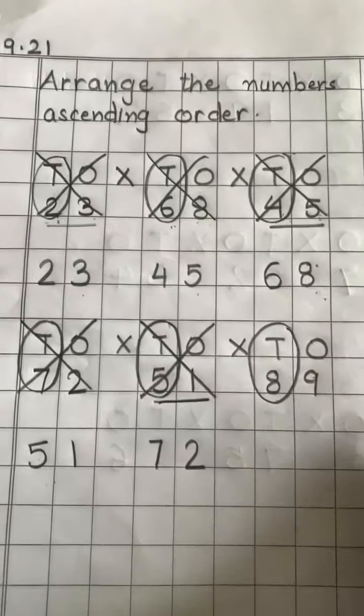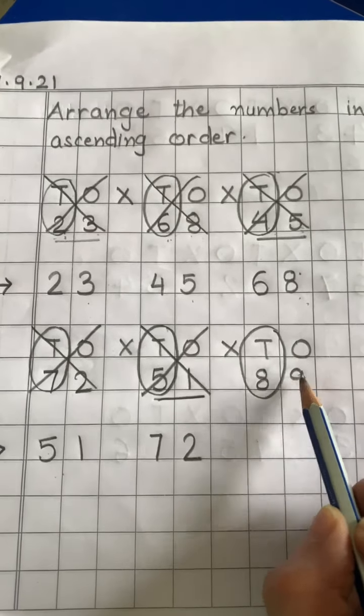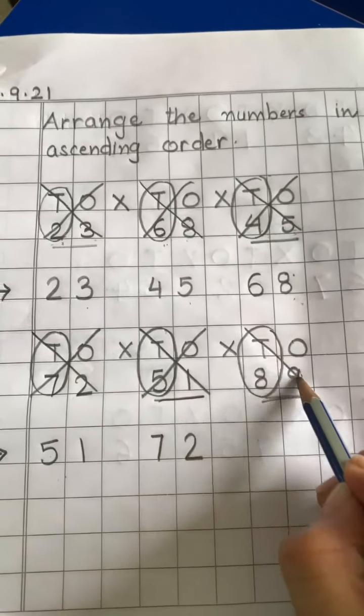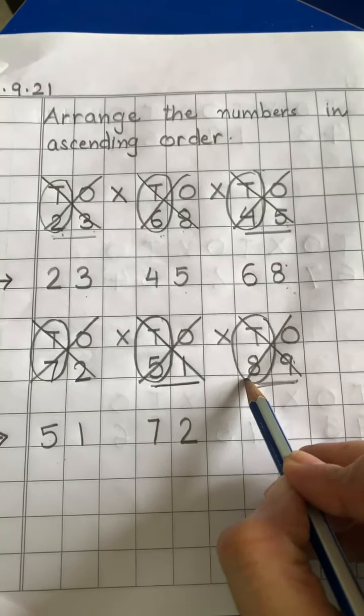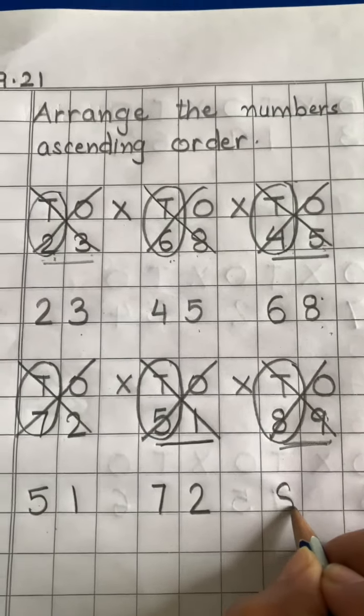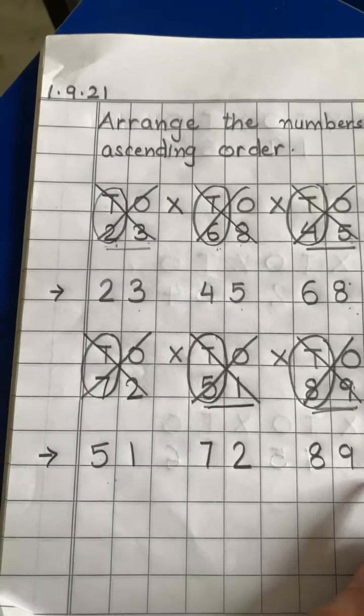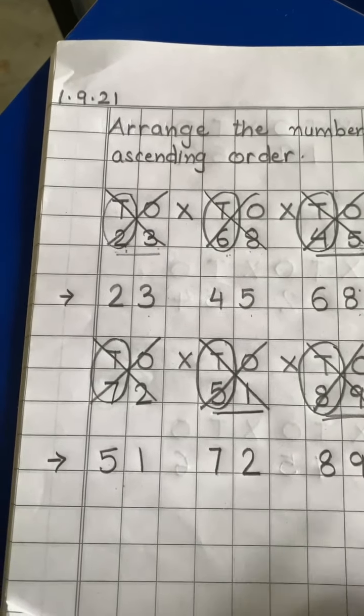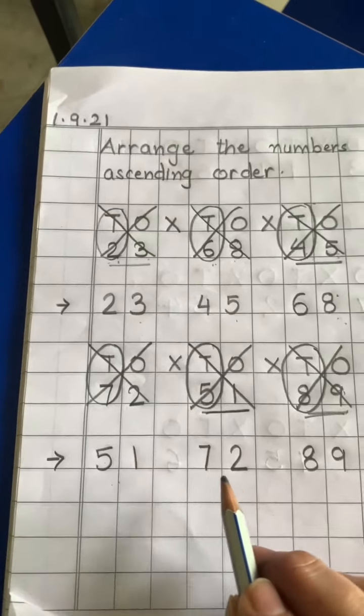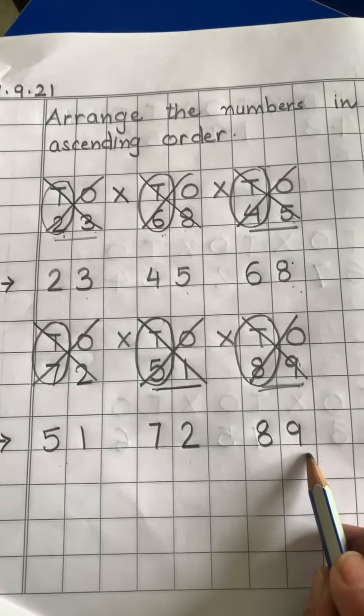Now, koon bachy hai? One number is left. Eighty nine. Cross number eighty nine. And write it here. Abhi ye kaisi arrange kiyye hamne numbers? In ascending order. Small number. Then usse beg. Then sabse beg. Okay?